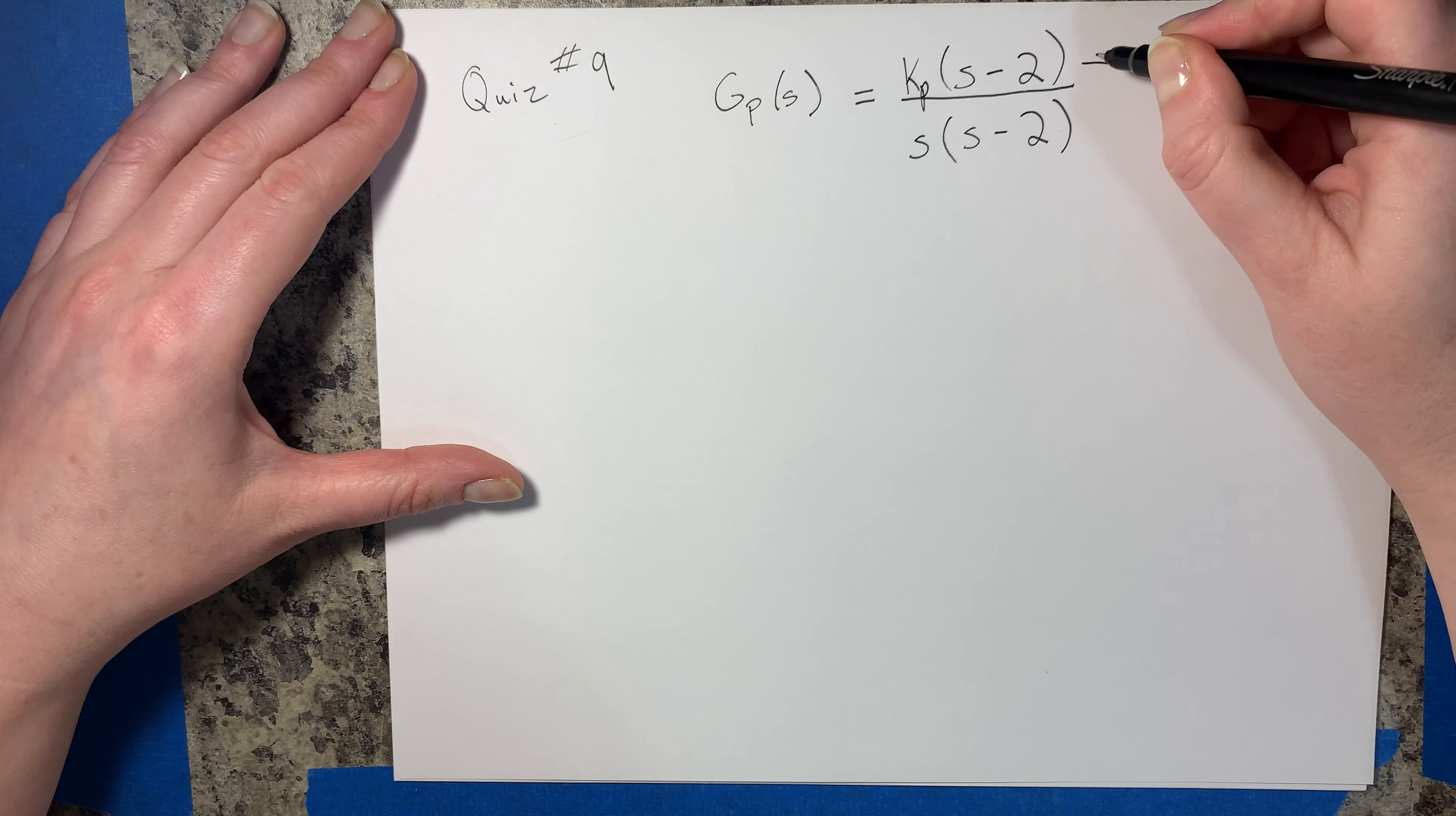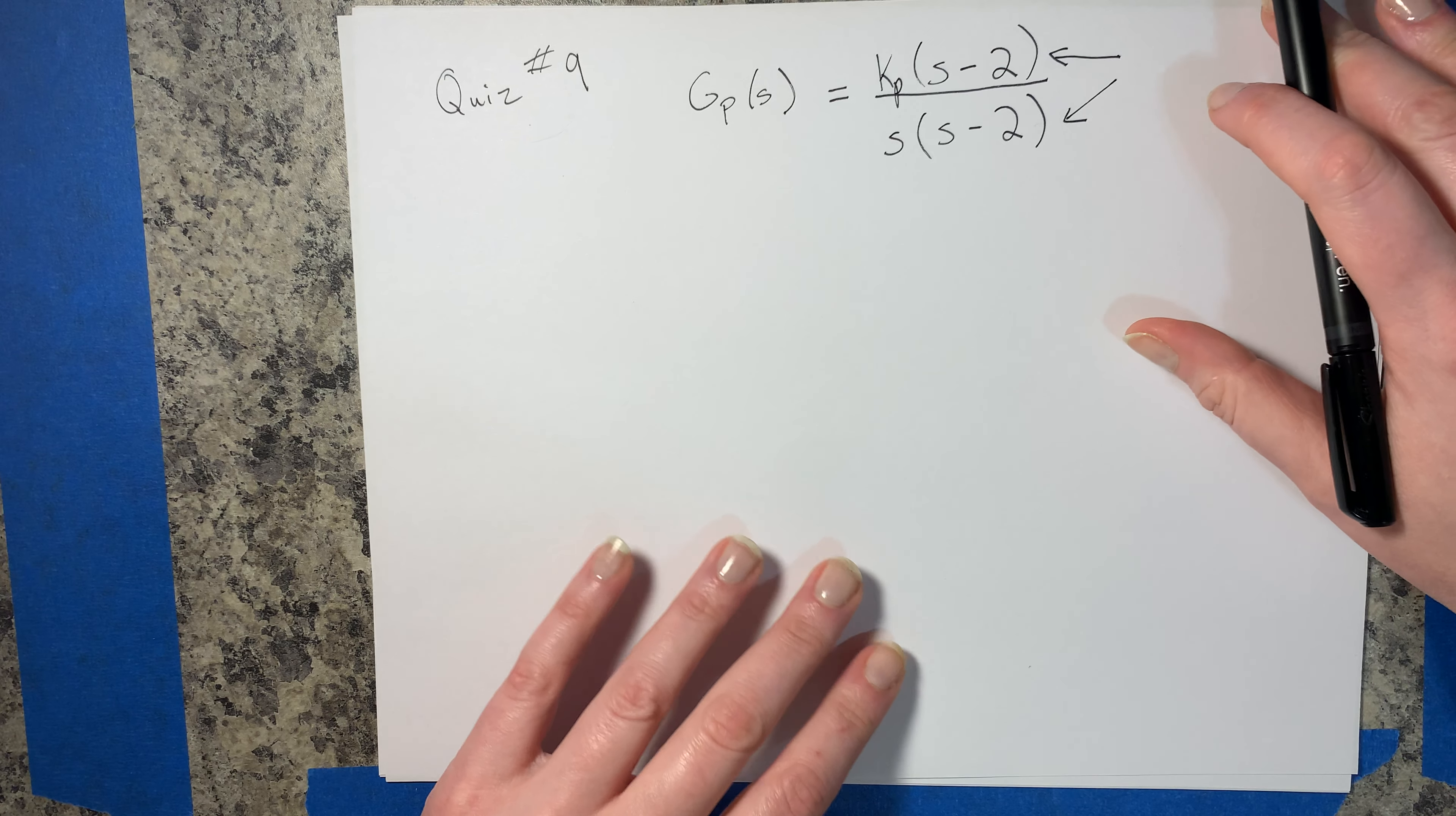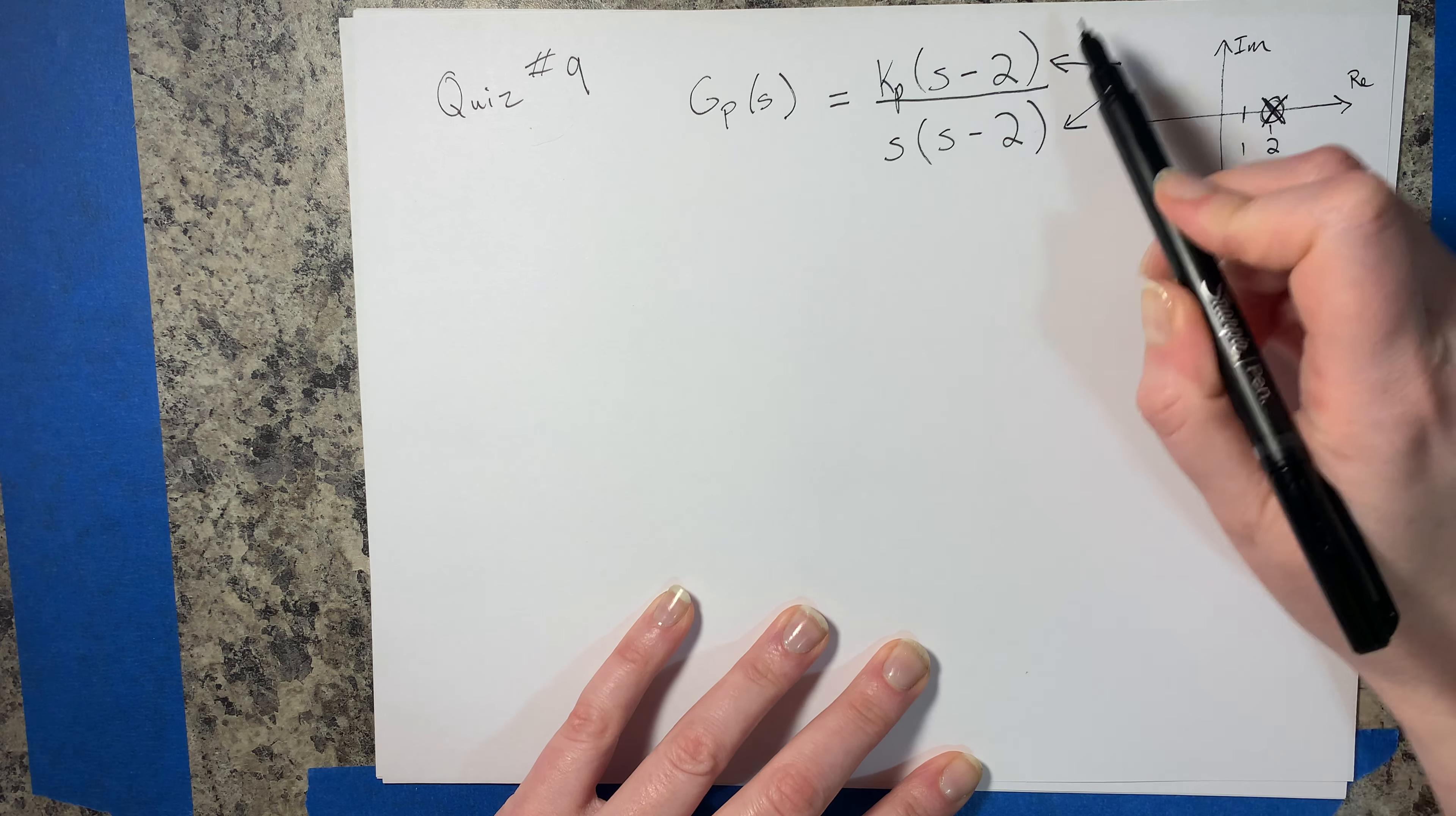So here we have a zero and a pole, they're at the same location. We were talking very briefly about when it's okay to cancel and when it's not okay to cancel. So the problem here with canceling is if the pole and zero are over here in the right-hand plane, which we know is really bad, that's a cause for instability. So they're over here. We don't want to cancel in that case.